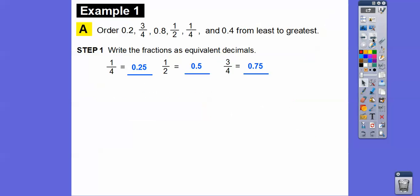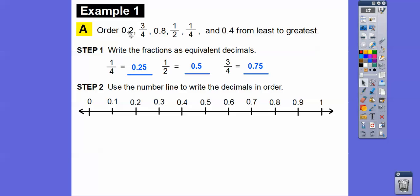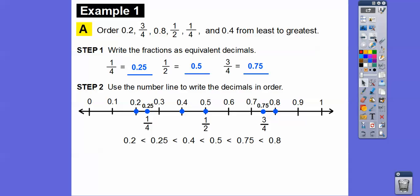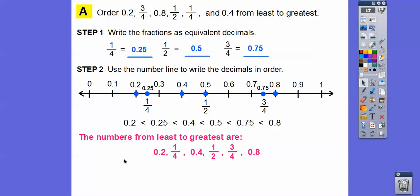Now place those numbers on the number line. Let's place 0.2 — there it is. Place 3 fourths: remember, 3 fourths is 0.75, so it's halfway between 0.7 and 0.8. Place 0.8. There's 1 half, there's 1 fourth at 0.25, and finally 0.4. Once you have them placed on the number line, you can read off the order — smallest to largest. So in order: 0.2, then 1 fourth (0.25), then 0.4, then 1 half, then 3 fourths, then 0.8.